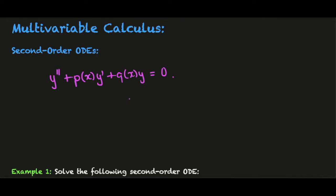In this video we want to look at solving second-order linear homogeneous differential equations. These are given in the following form: y double prime plus p(x) times y prime plus q(x) times y equals zero.